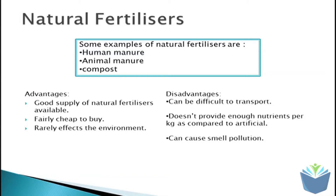Some of the disadvantages are the fact that it can be very difficult to transport. You need to cover a field, so you will need a large amount, and therefore you will need large vehicles to transport it. The amount of nutrients per kilogram is not as good as artificial, so pound for pound, artificial is probably more efficient. Obviously, there is also the associated smell.